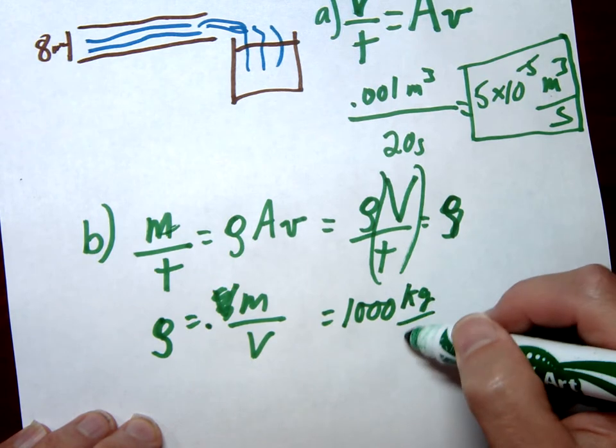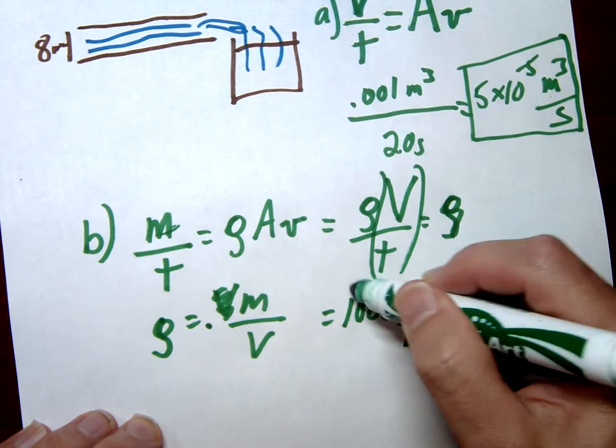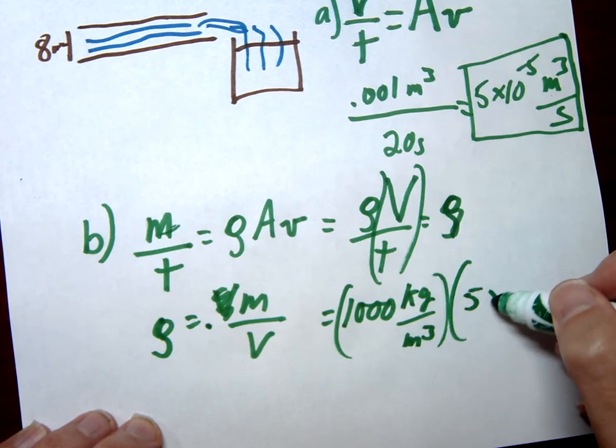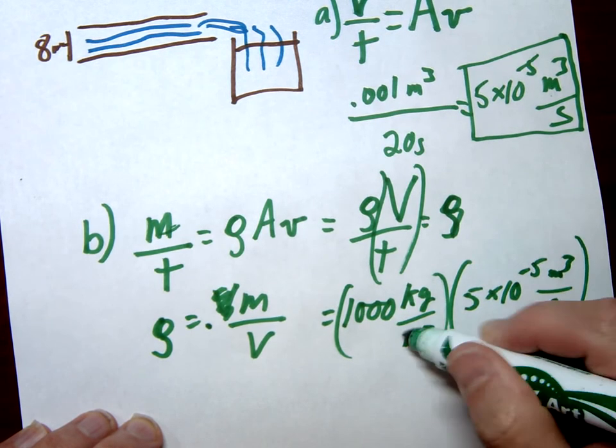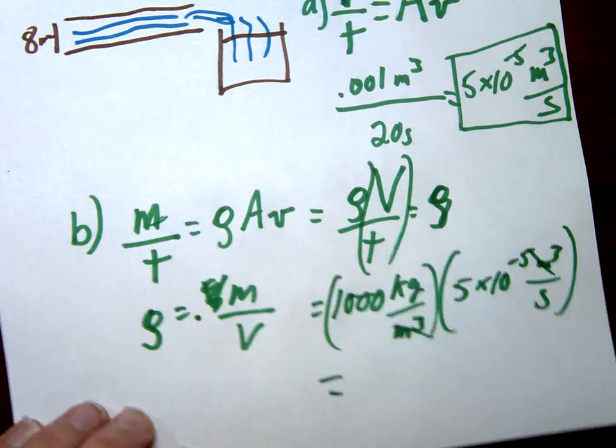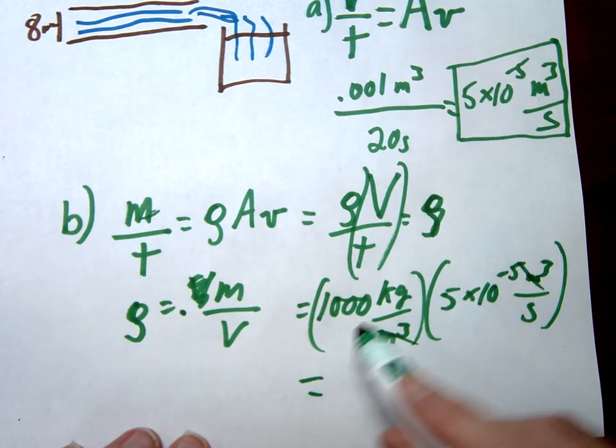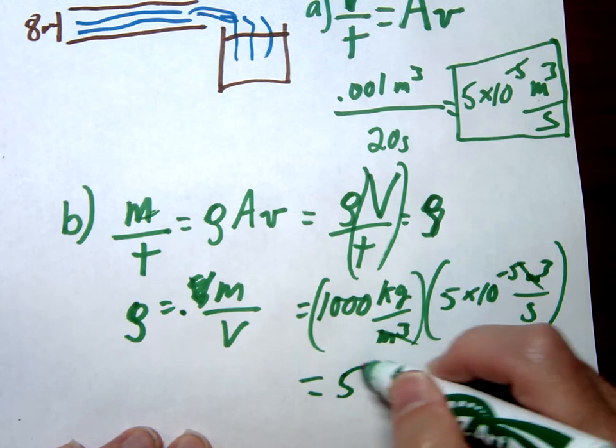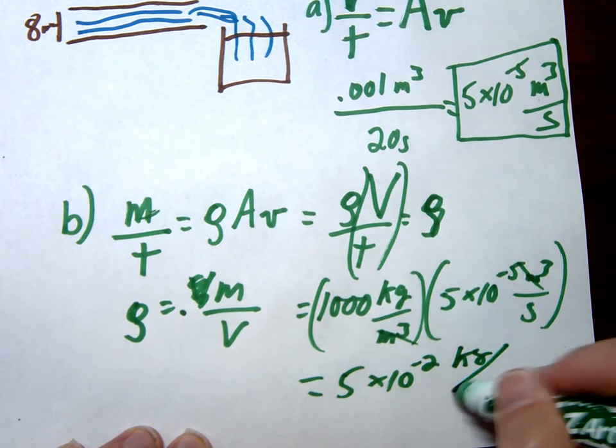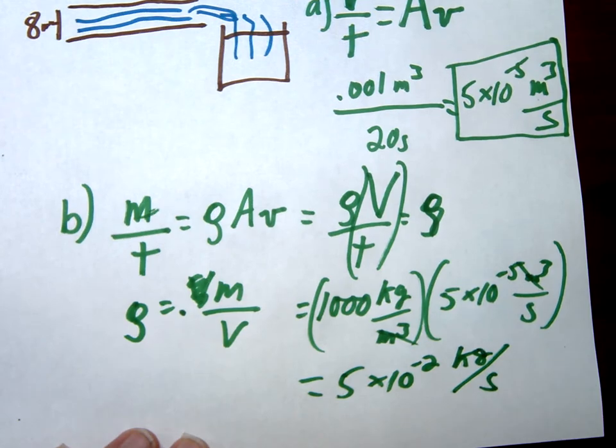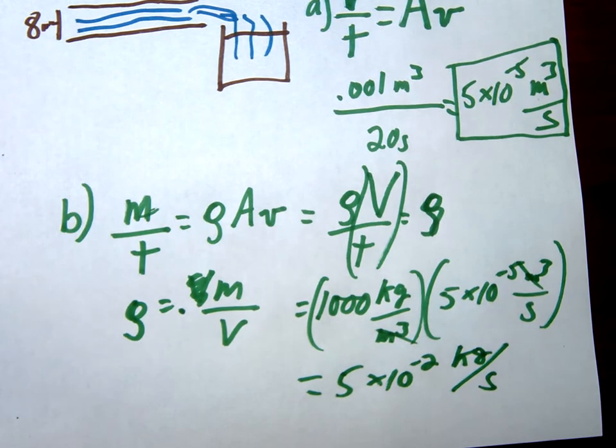Let's write the units just so you can see. So this would be kilogram per meter cubed times our 5 times 10 to the negative 5th meter cubed per second. And this is going to go ahead and give us our mass flow rate. And you can see easily this is just going to be 5 times 10 to the negative 2 kilograms per second. Alright, let's take a look at letter C.